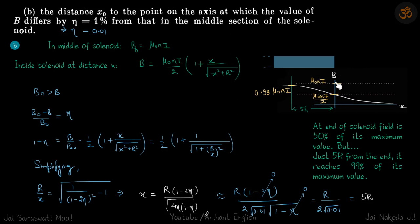This is the edge of the solenoid where the field is mu naught ni by 2. After that it only decreases. We need to find the point where it is 0.99 times mu naught ni. Obviously that point will lie inside the solenoid. Inside the solenoid at distance x we just derived field is mu naught ni by 2, 1 plus x by root x square plus r square.